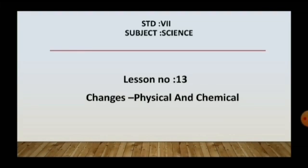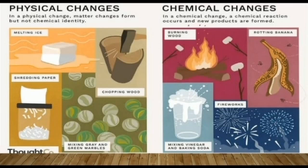We are going to start with our new lesson that is Changes Physical and Chemical. What are the causes of the changes occurring in the surroundings? When there is a change in the structure and the state of the substances that surround us, then there are changes caused in the surrounding. There are physical, chemical and biological changes occurring around us.